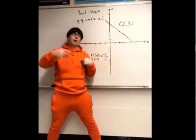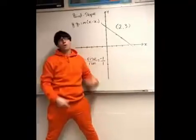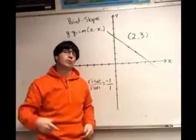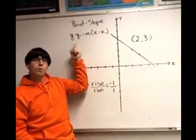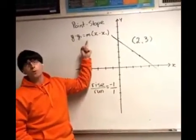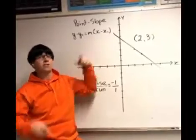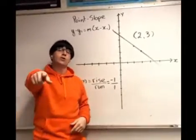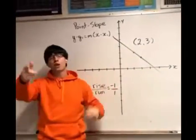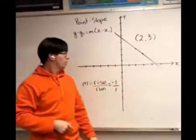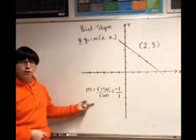Yo, it's Vector, that's my name. I'm here to tell you how to graph some lines. The first thing we're going to learn about is point-slope form — y minus y1 equals m, right, x minus x1. That's right, all you need to use is a point and a slope. Put them together, you create yourself a point-slope equation.